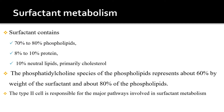Type 1 alveolar cells are squamous and extremely thin cells involved in the process of gas exchange between the alveolus and the blood. Whereas type 2 alveolar cells are involved in the secretion of surfactant protein. So surfactant secretion and metabolism is carried out by type 2 alveolar cells.